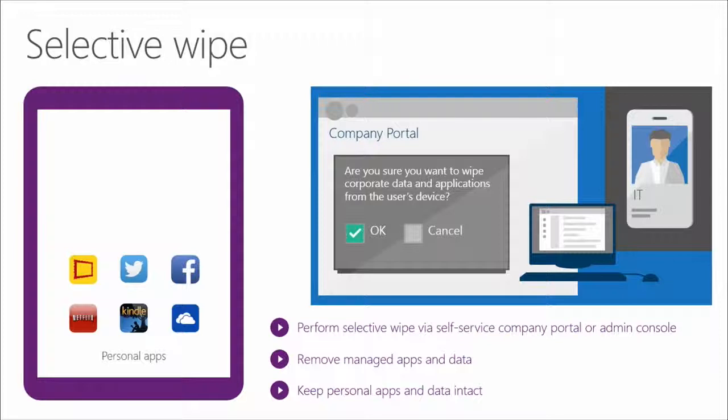When a device is removed from enrollment — for example, a user re-gifting their device — a selective wipe command is sent. The device removes company applications and associated data. In a simpler case, a certificate associated with those applications is revoked so they no longer function, or encrypted data becomes inaccessible without the certificate. Applications that play well in this environment remove the data they're responsible for and then remove themselves, while personal data is always preserved.